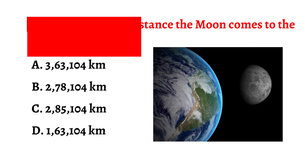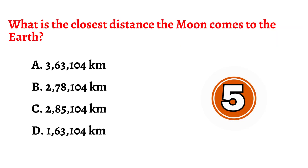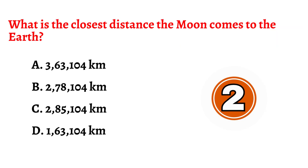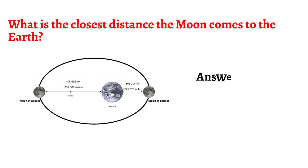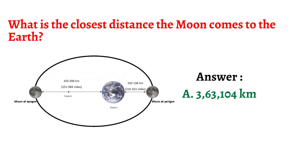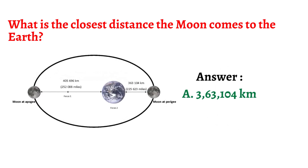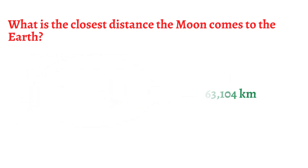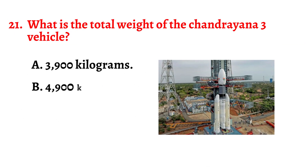Question number twenty: What is the closest distance the Moon comes to the Earth? The correct answer is option A: 3,63,104 kilometers.